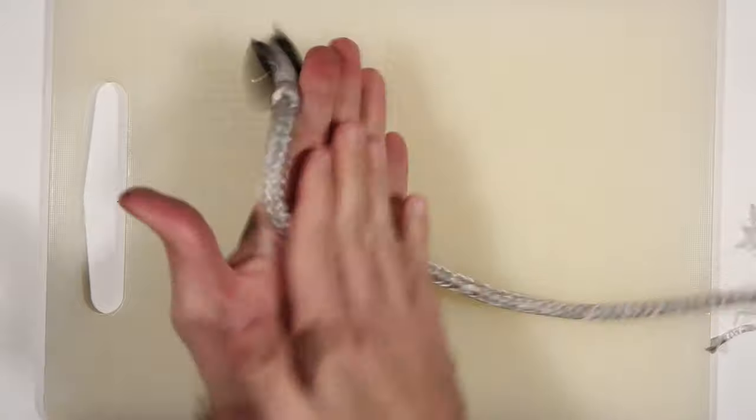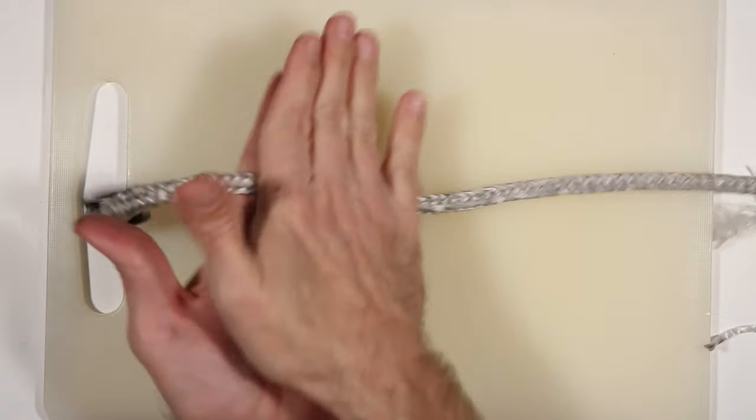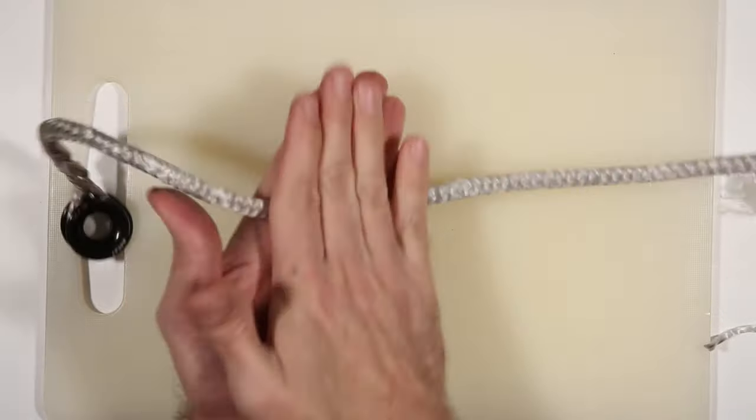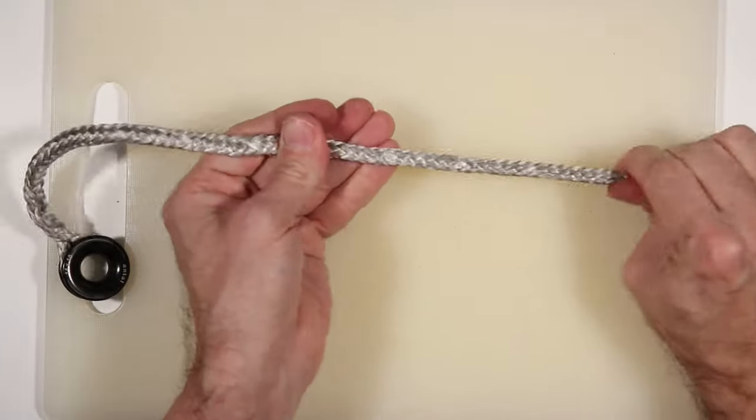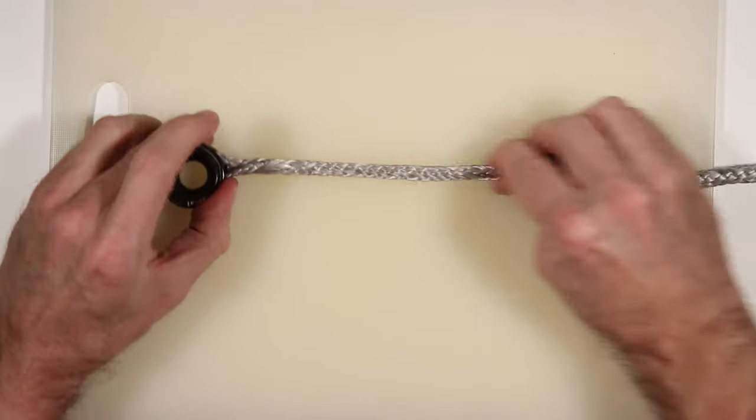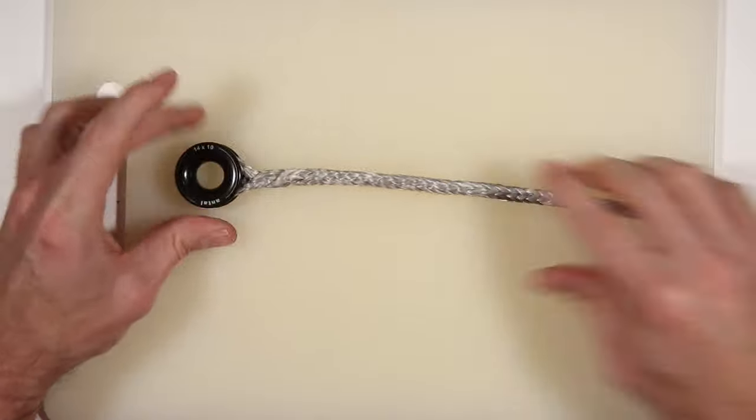We're almost there, you just need to give the tail of the splice a rub between your hands to make it smooth. So there we have it, one Brummel lock splice. Thank you for watching.